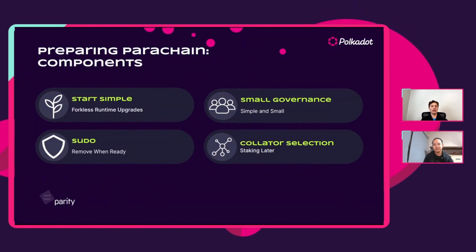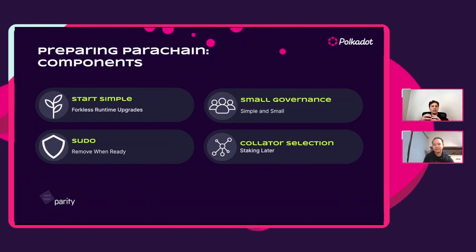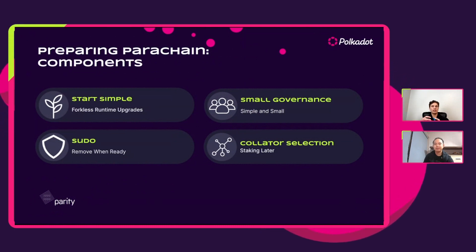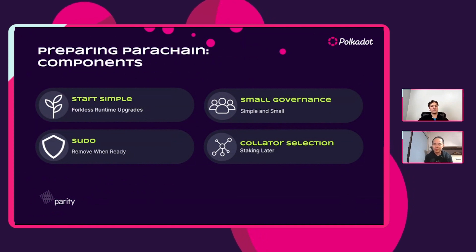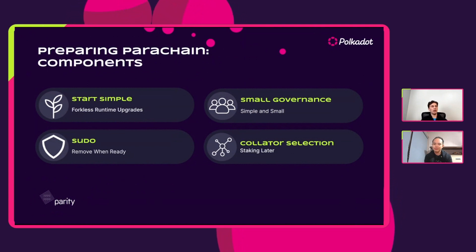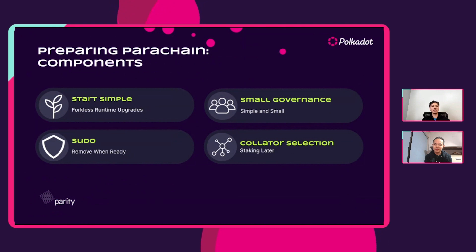We also recommend using collator selection instead of a full staking mechanism. Collators talk to the validators on Polkadot — they're essentially validators on your chain that sync up with Polkadot validators. Collator selection selects the collators that will produce blocks, and you can reward them, for example, by taking fees and putting them into a pool for collators. It's not as secure as a full staking chain, but we recommend starting here because there have been attacks on staking chains with insufficient stakers. Start small and secure, then move to more decentralized as your user base grows.